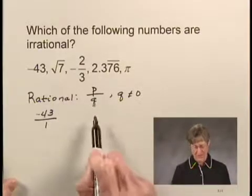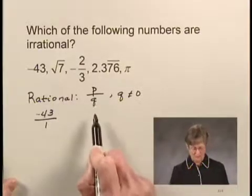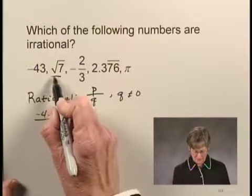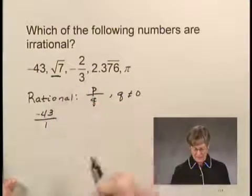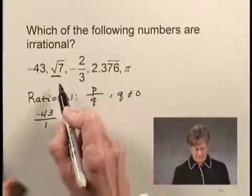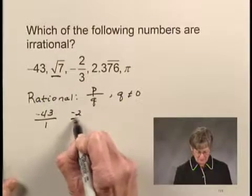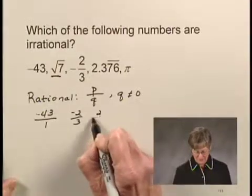The square root of 7 cannot be written as a quotient of integers with a non-zero denominator, so this is an irrational number. Negative 2 thirds is a rational number. I can write it as negative 2 over 3, or I could write it as 2 over negative 3.